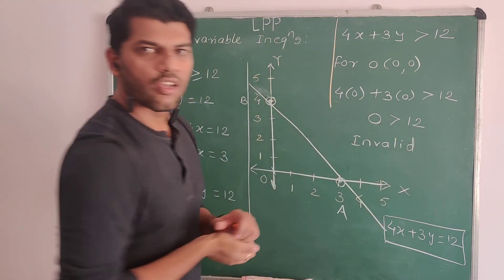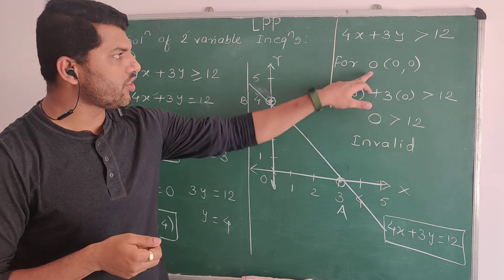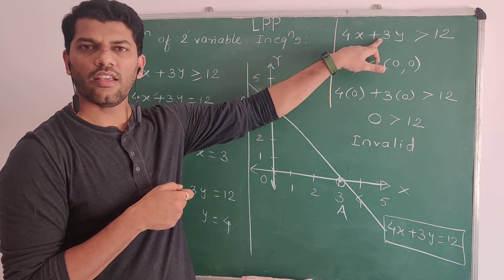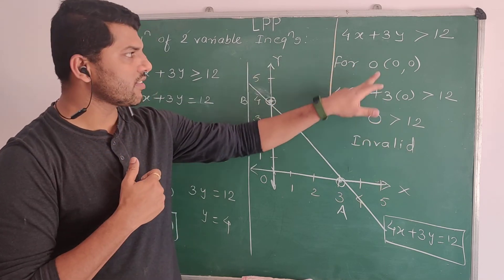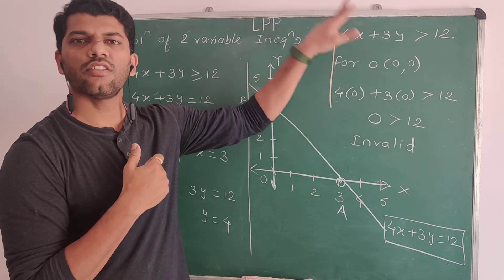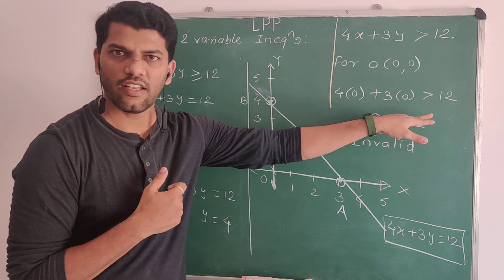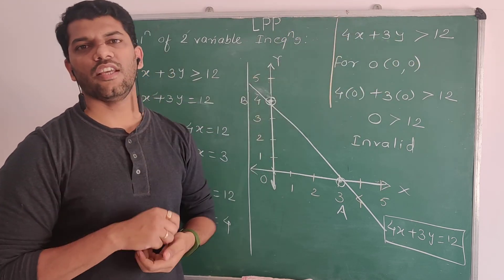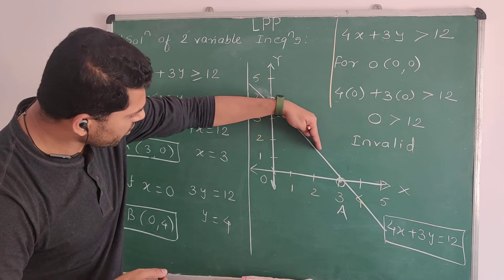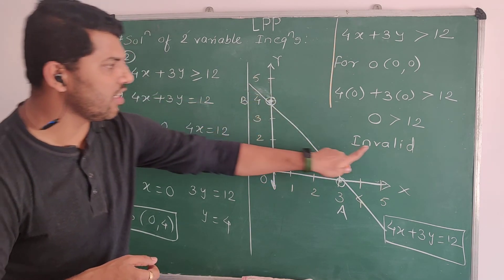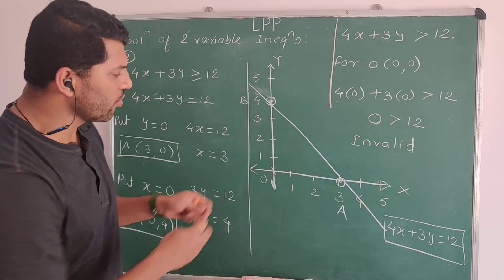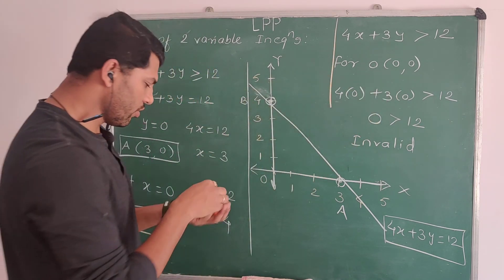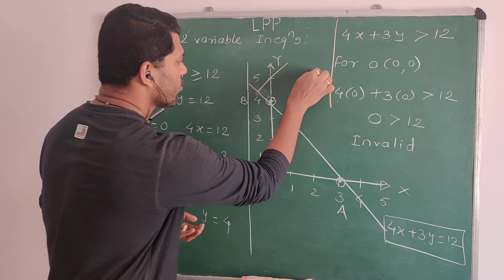This origin is not satisfying this inequality. Another point is this origin is not a part of this inequality. The origin side is not satisfying this inequality. This is the origin side which is invalid. The solution set lies on this side. This is the solution set.